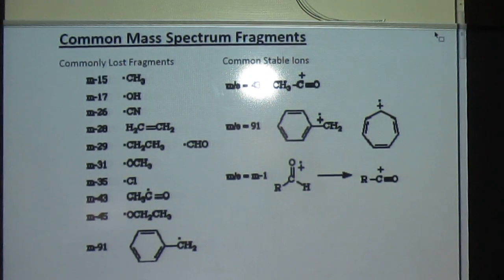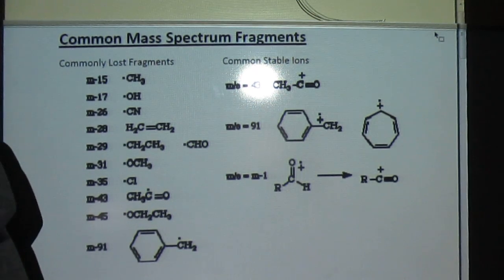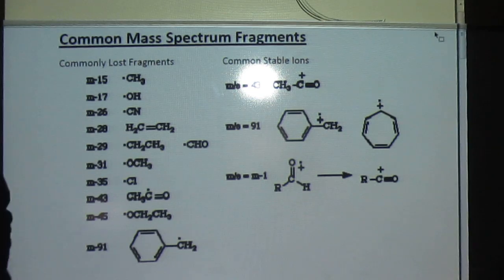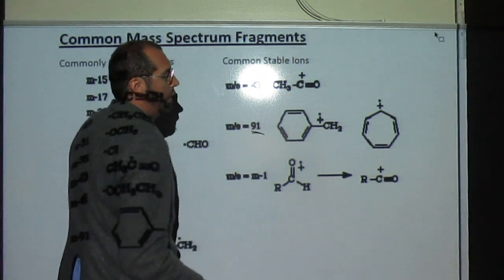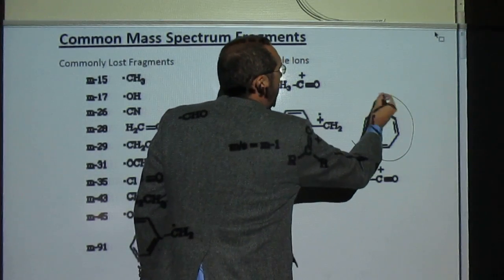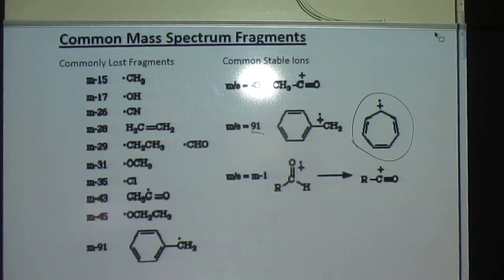So when we see a line in that mass spectrum, that means it's detecting it. So remember that big peak, or the base peak, was at 91. This is a very common ion. This is what we imagine it to be the tropelium ion. But that comes from a benzyl group.